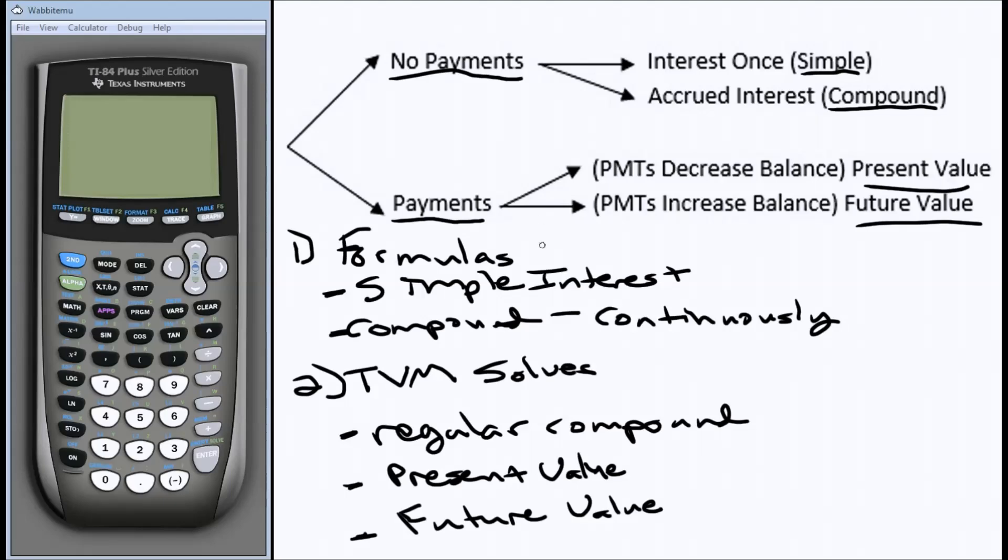If that's the case, for the general problem, if we have a present value problem, then we know that our final balance, or the future value of the present value problem, will equal zero.